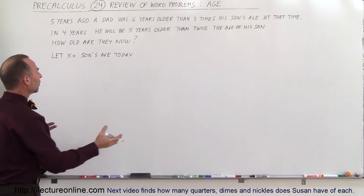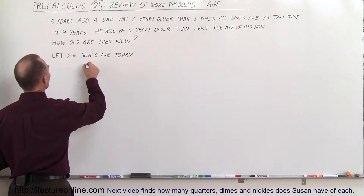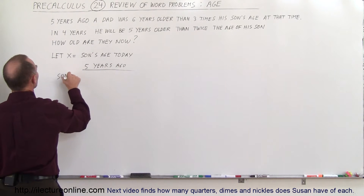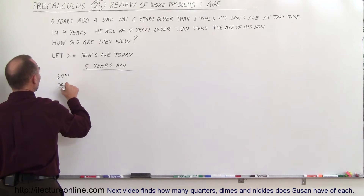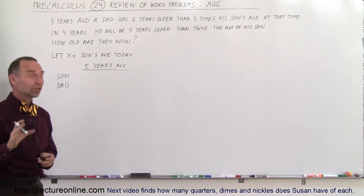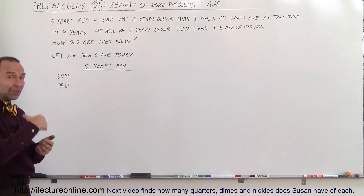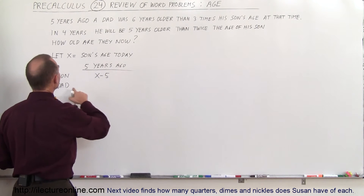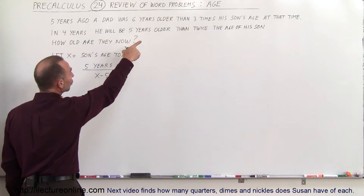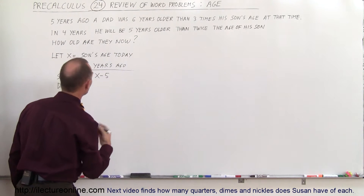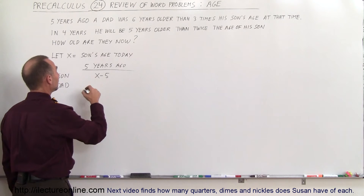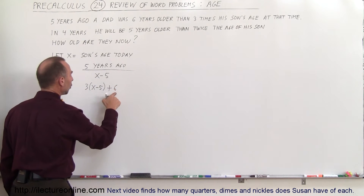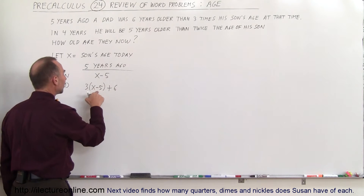Let's go to a period five years ago. We're going to express the son's age and the dad's age in terms of X. If the son's age is X years today, then five years ago it would be X minus five. The dad was six years older than three times his son's age, so the dad's age five years ago was three times (X minus five), plus six.